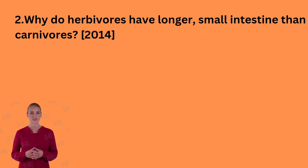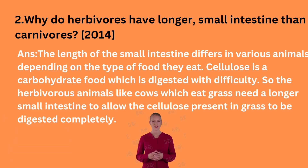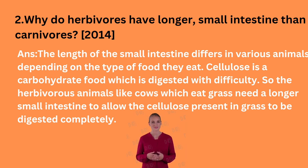This question is also from 2014. Why do herbivores have a longer small intestine than carnivores? The length of the small intestine differs in various animals depending on the type of food they eat. Cellulose is a carbohydrate food which is digested with difficulty, so herbivorous animals like cows which eat grass need a longer small intestine to allow the cellulose present in grass to be digested completely.